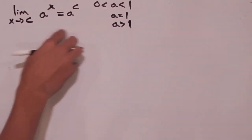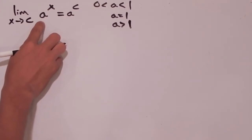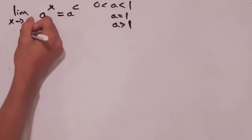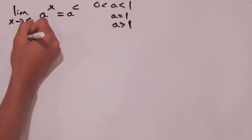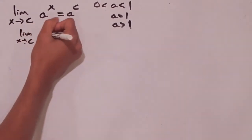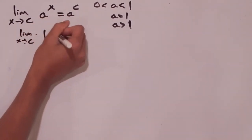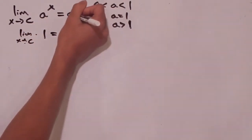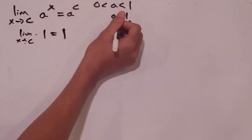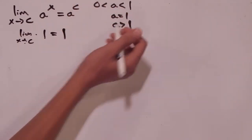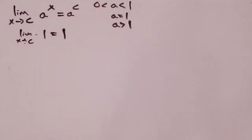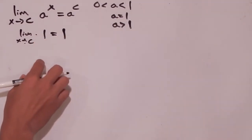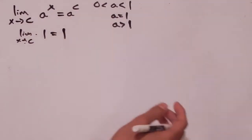If we plug in 1 for a, then 1 to the x power is always going to be 1. So we get the limit as x approaches c of 1, which is a constant, and that equals 1. We can check: a to the c when a equals 1 is still 1, because whenever 1 is raised to any power you just get 1 right back.